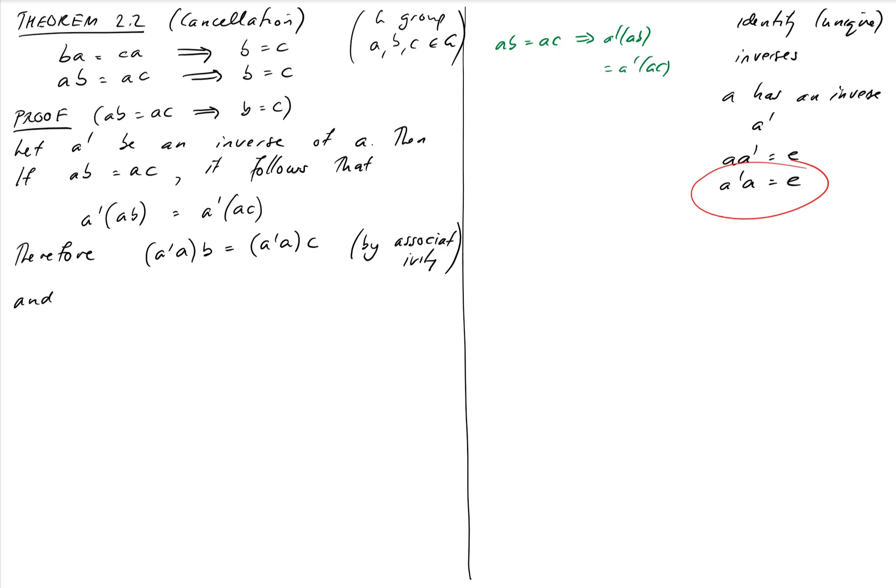So we're being really painstakingly rigorous and careful here. So the next step would be to say, I want to make use of my identity statement, A prime A equals E. But at the moment, my parentheses are in the wrong place. And we could say, therefore, we can move the parentheses, because the group operation is associative. That means the order in which we evaluate terms like this one, it doesn't matter. We can evaluate A prime A first, or we can evaluate AB first, and we'll get the same result. And hence, EB equals EC, or B equals C.